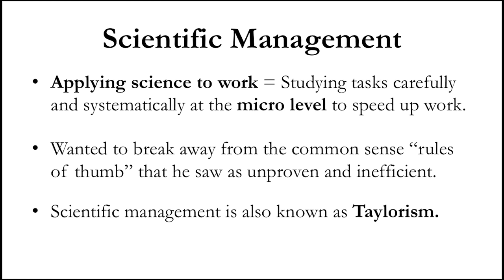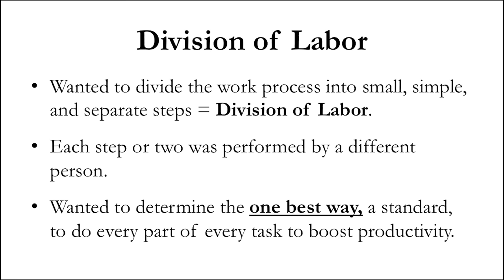He wanted to break away from the common sense rules of thumb that he saw as unproven and inefficient. Workers had their own self-styled ways of doing things that they would pass around, and he said there's really no way to know if this is the best way to do things, so let's study it. Scientific management is also known as Taylorism, which is named after him.